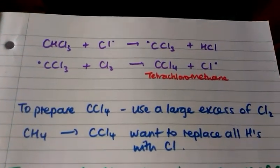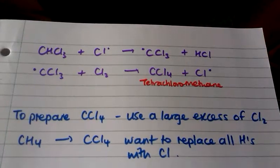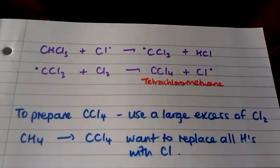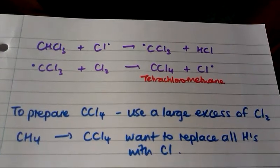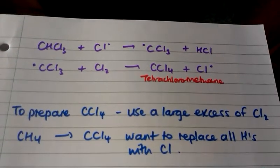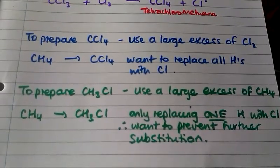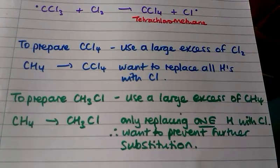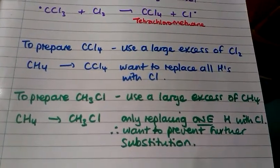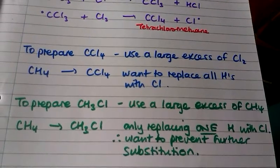If we want to prepare tetrachloromethane, we need to use an excess of chlorine because we want to replace all of the hydrogens on the methane molecule with chlorine. However, if we want to prepare just chloromethane, we need to use a large excess of methane because we only want to replace one of the hydrogens with chlorine, and using more methane prevents further substitution from taking place.